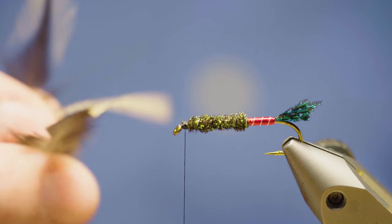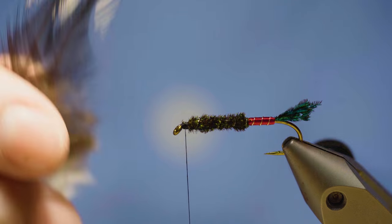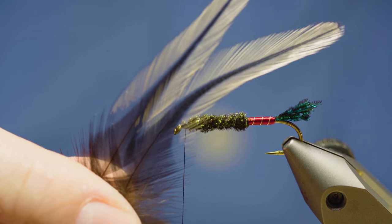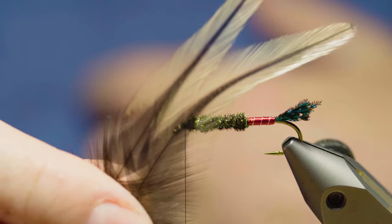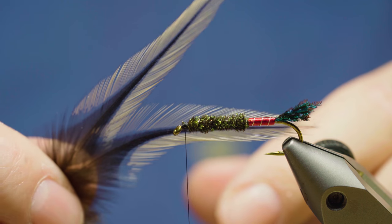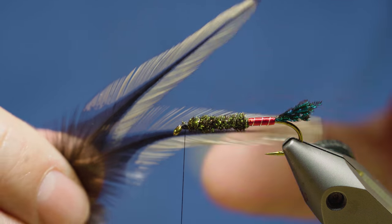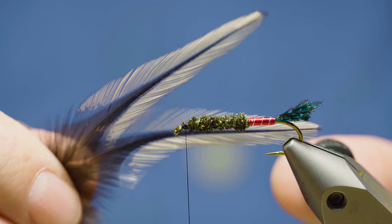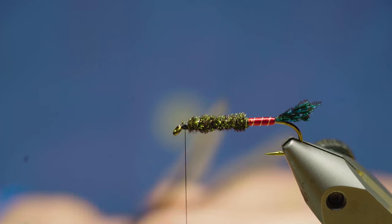Okay, so I have two badger hackle. This is off of the saddle. You can use a cape as well, streamer style. Generally I try to keep the wings about the width of the gap of the hook that I am tying on, so that is fairly close.